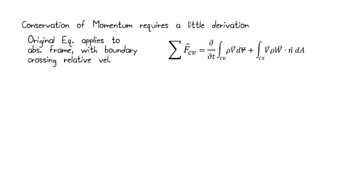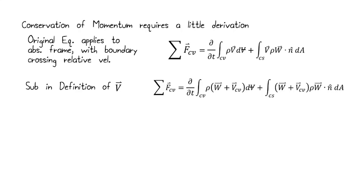Conservation of momentum, this is actually a little tricky. Our original equation applies to an absolute reference frame and the relative velocity crossing the boundary. We've got the sum of forces on the control volume, the momentum within the control volume, and then our v rho, and we are going to do the same trick that we did with conservation of mass and put w dot n dA. We can manipulate this a little bit.